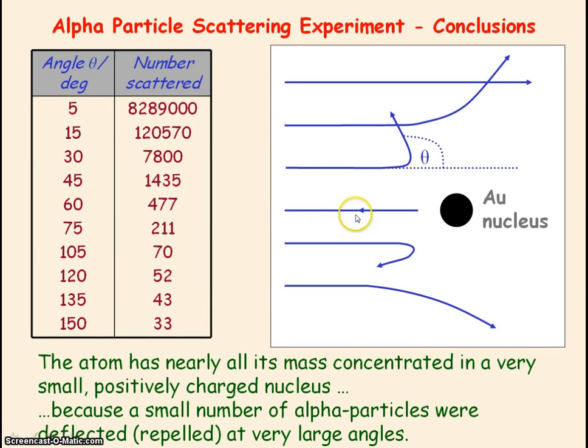And finally here, you can see that when the alpha particle makes a head on approach with the gold nucleus, it experiences the maximum electrostatic force of repulsion and experiences 180 degrees deflection. That is, it becomes backscattered.